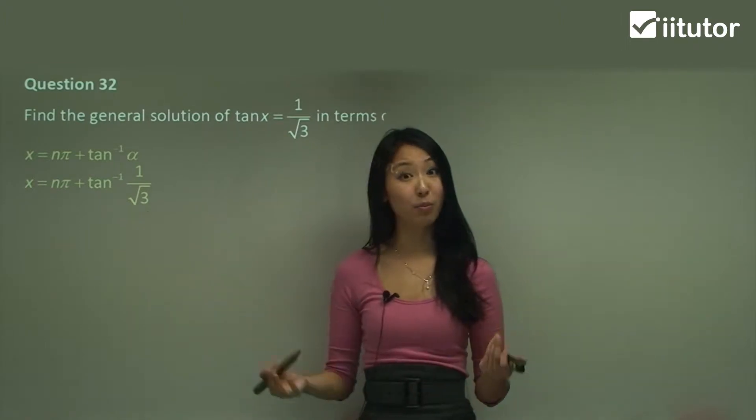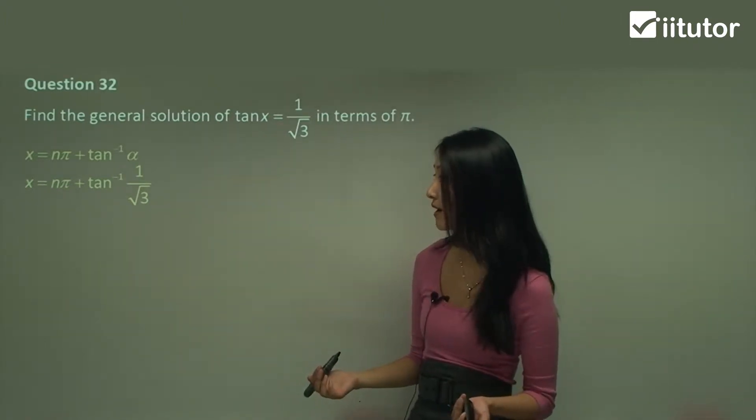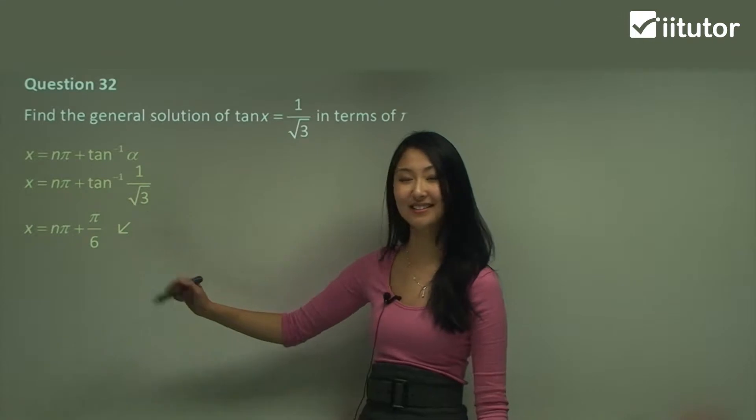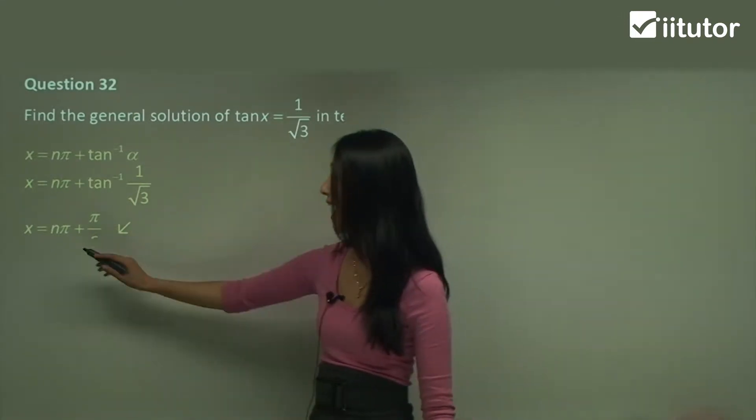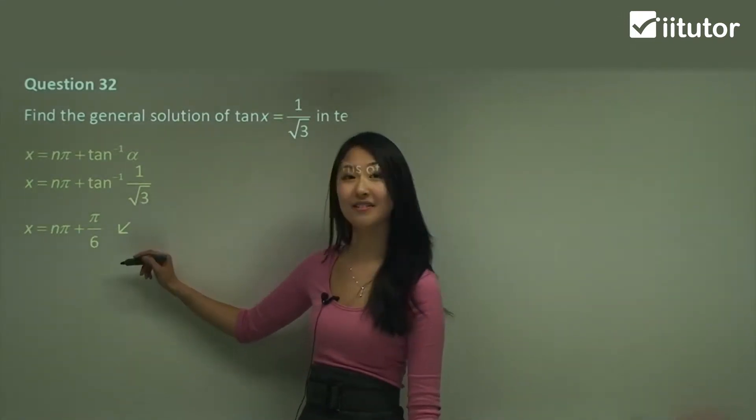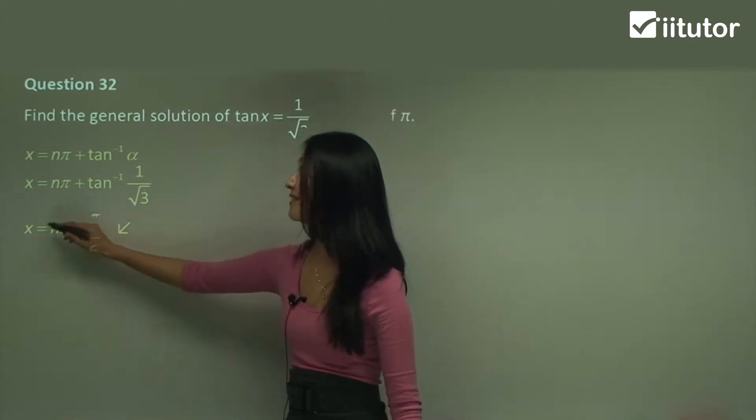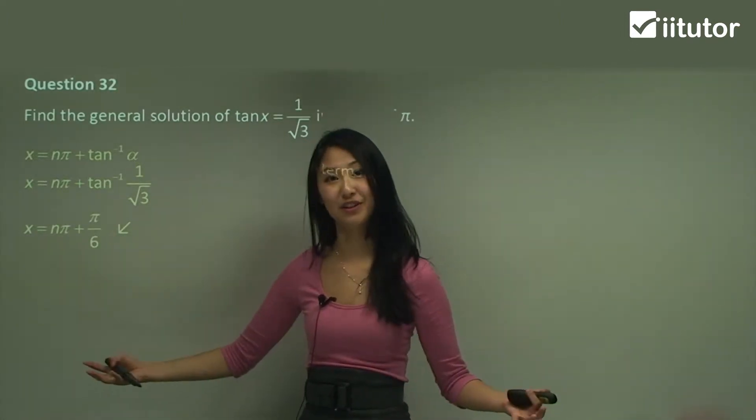Now tan of what equals to one on square root three? That's going to be pi on six. So we just write it as n pi plus pi on six. Remember, this n makes it the general solution.